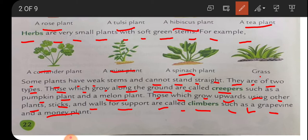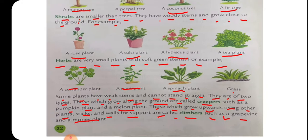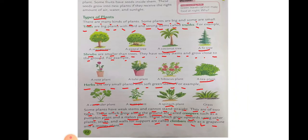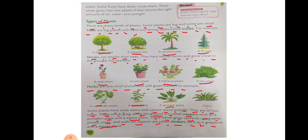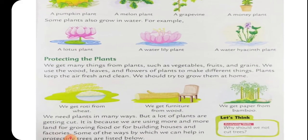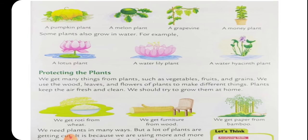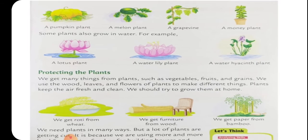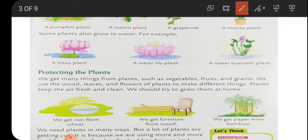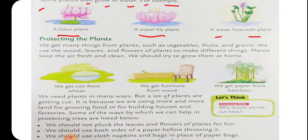Big vegetables and fruits like watermelon are all creepers. The examples of creepers are pumpkin plant and melon plant; the climbers are grape vine and money plant. Some plants also grow in water - for example, a lotus plant, a water lily plant, and the water hyacinth plant.